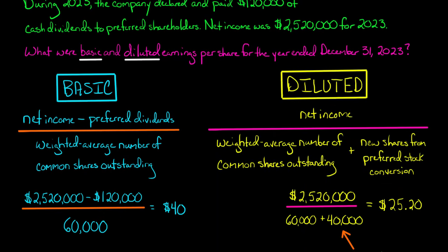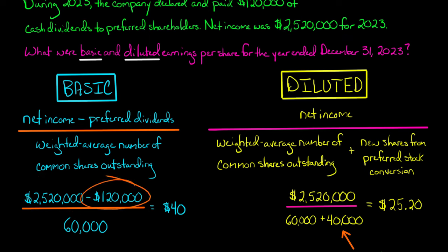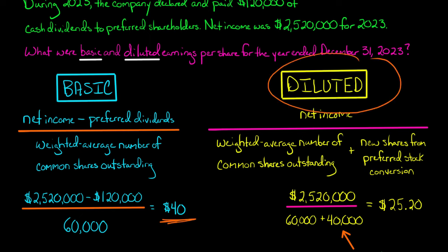For basic earnings per share: we start with net income of $2,520,000, subtract the preferred dividends of $120,000 to get $2,400,000 in the numerator, then divide by the 60,000 common shares outstanding during the period. That gives us a basic earnings per share of $40.